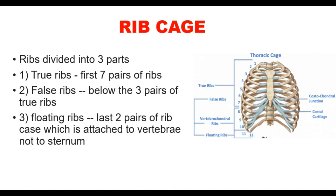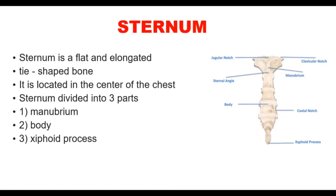Now let's see about the sternum. The sternum is a flat and elongated tie-shaped bone located in the center of the chest, attached to the true and false ribs. The sternum is divided into three parts: manubrium, body, and xiphoid process.